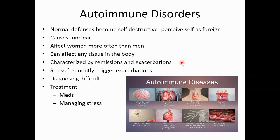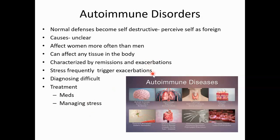Autoimmune disorders typically have remissions and exacerbations, and stress frequently can trigger exacerbations. Diagnosing these is difficult because it's often just a matter of ruling everything else out and then ruling in autoimmune disorders. Treatments include multiple types of medications depending on what the autoimmune disorder is, and managing stress, which again can contribute to an exacerbation.